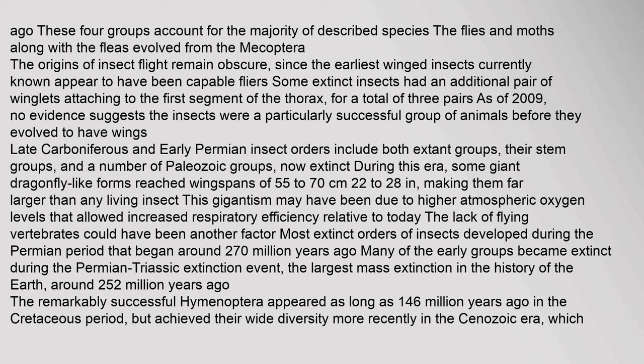The first insects probably appeared earlier, in the Silurian period. Four super-radiations of insects have occurred: beetles evolved about 300 million years ago, flies evolved about 250 million years ago, and moths and wasps evolved about 150 million years ago. These four groups account for the majority of described species. The origins of insect flight remain obscure, since the earliest winged insects currently known appear to have been capable flyers.